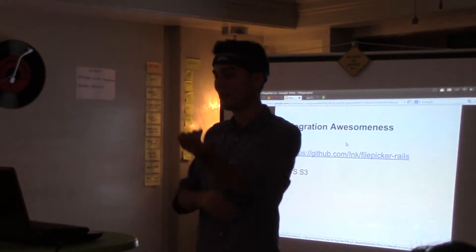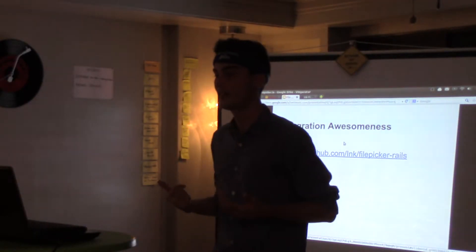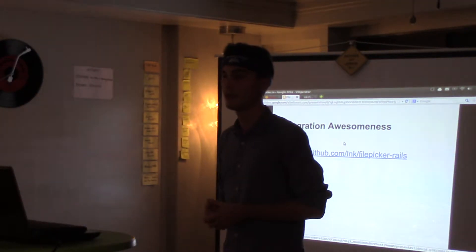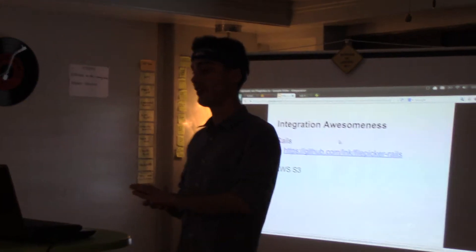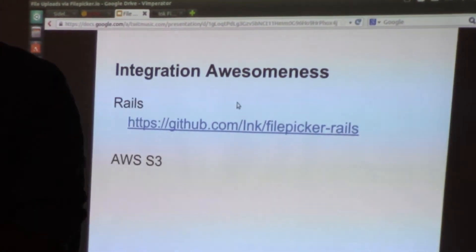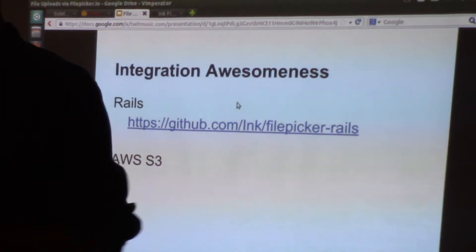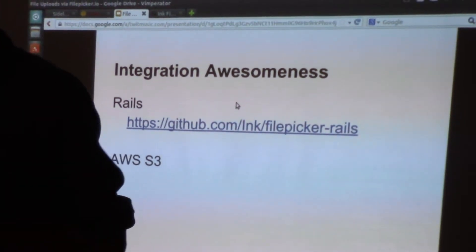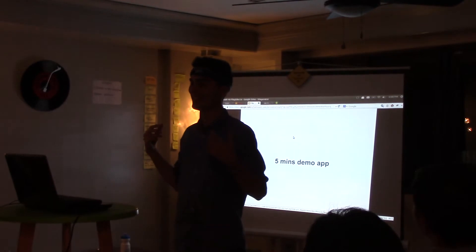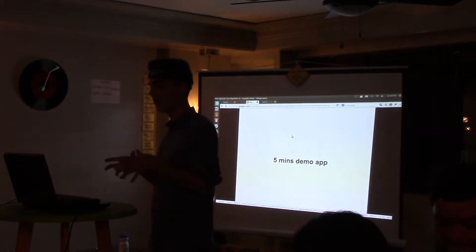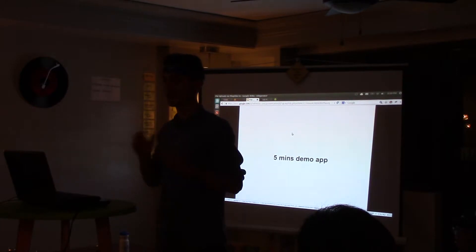Basically, you can integrate file picker into your Rails app two ways: one way would be through the gem file using Ruby, and the other way would be through the JavaScript way. I'll be giving you the demo app and showing you a general overview of how file picker works and what its strengths are.